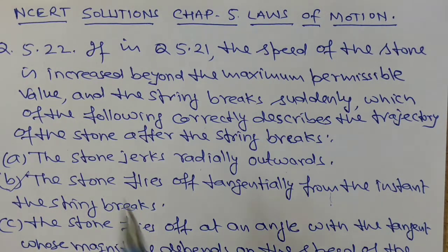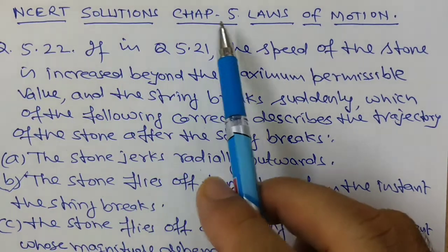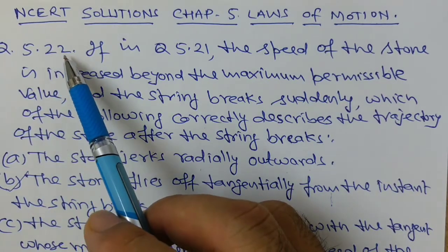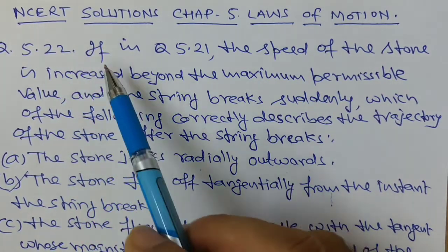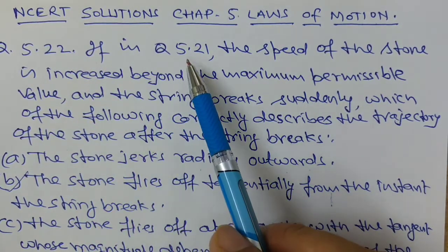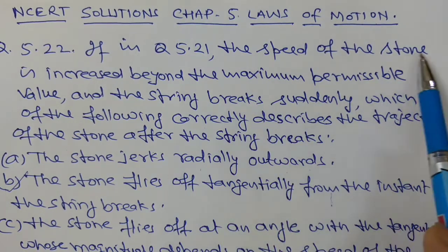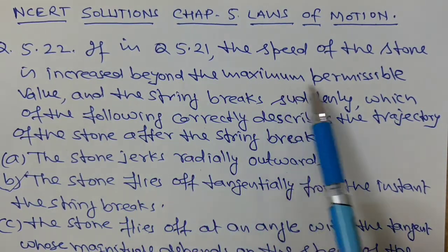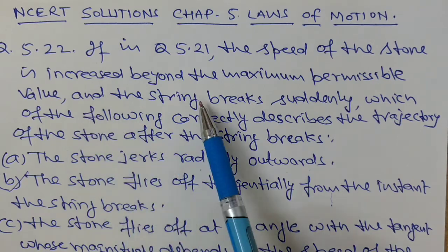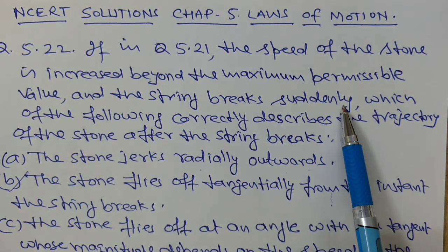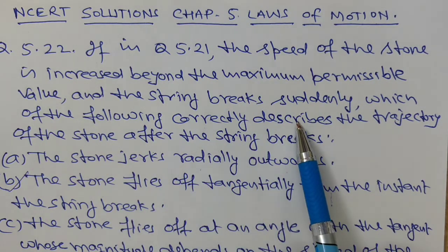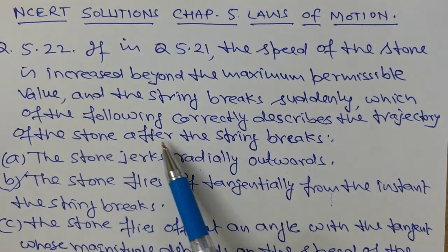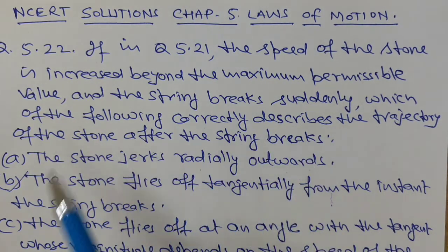Hello Students. NCRD Solutions, Chapter 5, Laws of Motion, Question No. 5.22. If in question 5.21 the speed of the stone is increased beyond the maximum permissible value, the string breaks suddenly. Which of the following correctly describes the trajectory of the stone after the string breaks?